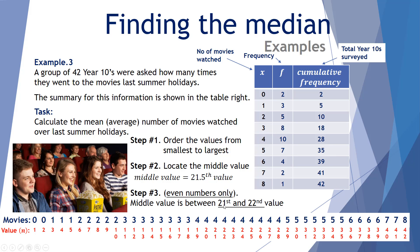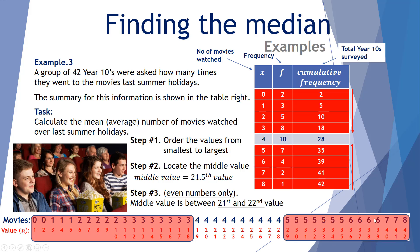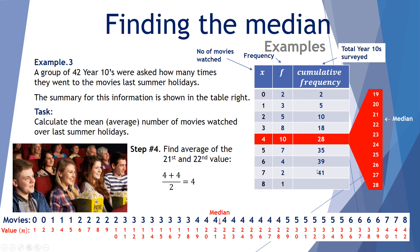We need the middle value between the 21st and 22nd student. Up to the 18th student, they went three or fewer times. Students 19 through 28 all went four times — that's 10 students covering positions 19 to 28. Since positions 21 and 22 both fall in this group, both students went four times. So the median is (4 + 4) / 2 = 4.